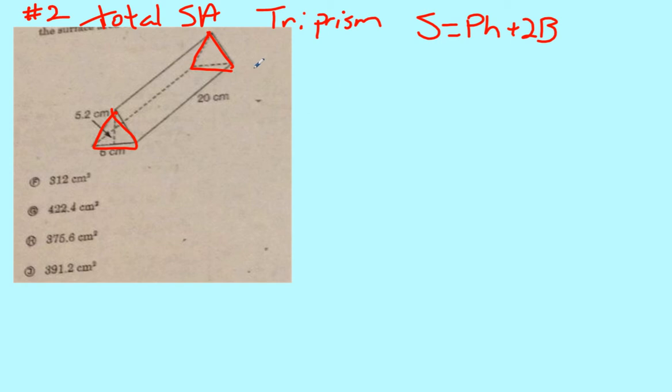So we need perimeter and it only gives us one side, so I'm going to assume this is an equilateral triangle, and that seems reasonable enough here. So we can say that our perimeter is just 6 plus 6 plus 6, so just 18.